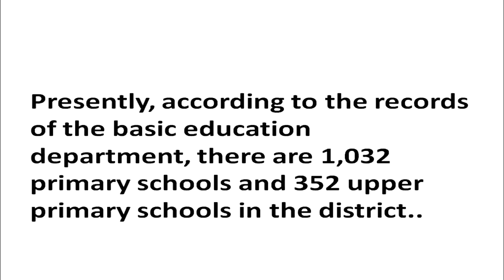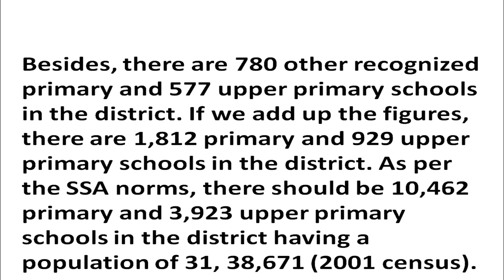According to records of the basic education department, there are 1,032 primary schools and 352 upper primary schools in the district. Besides, there are 780 recognized primary and 577 upper primary schools in the district. Adding up these figures, there are 1,812 primary and 929 upper primary schools in one district on average. As per the SSA norms, there should be 10,462 primary and 3,923 upper primary schools in districts having a population of 3,138,671 as per Census 2001.